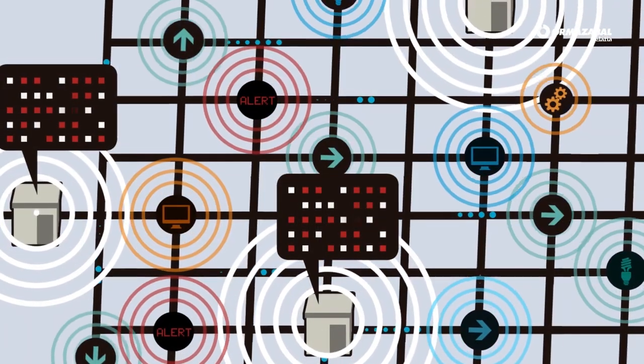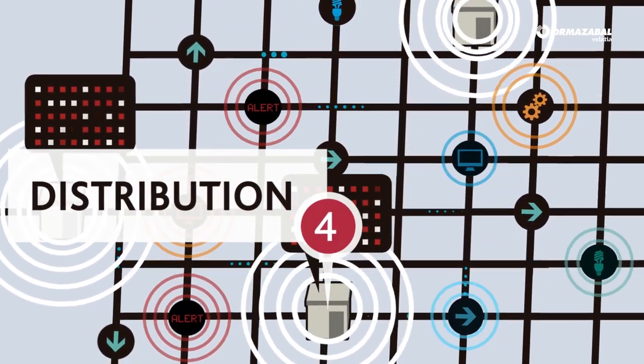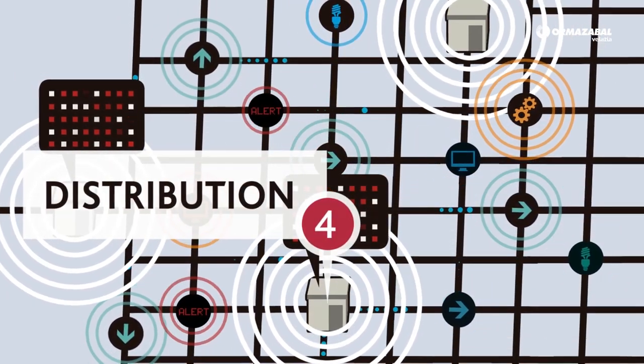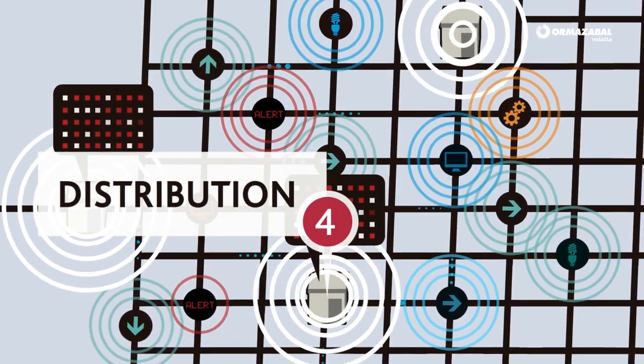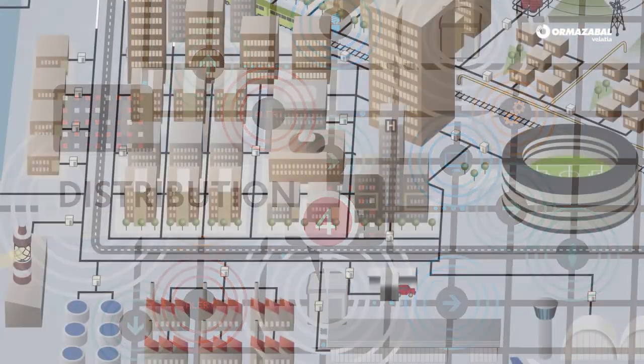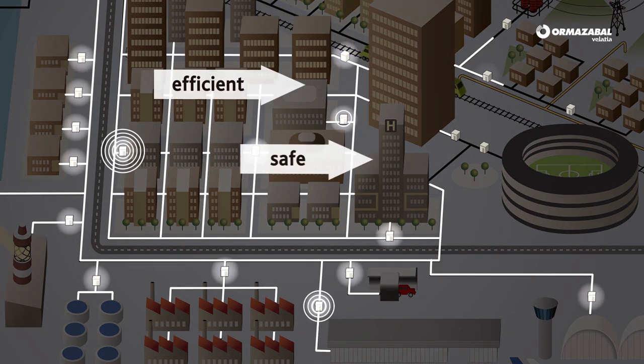All these distribution and transformer substations are integrated with protection and automation systems to ensure supply, the rational use of resources and the safety of the environment, achieving an efficient, safe and sustainable electrical distribution.